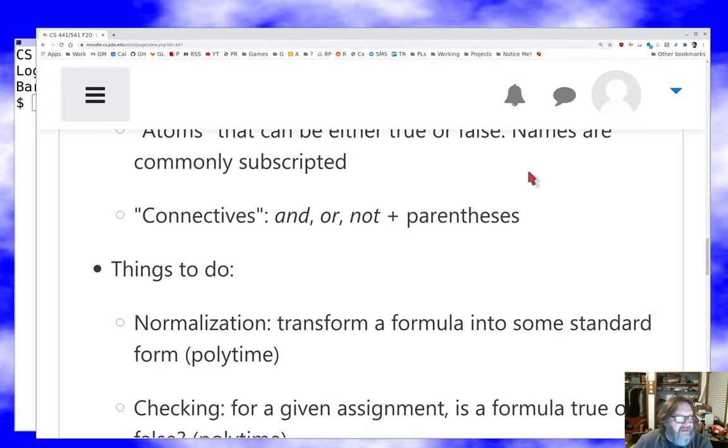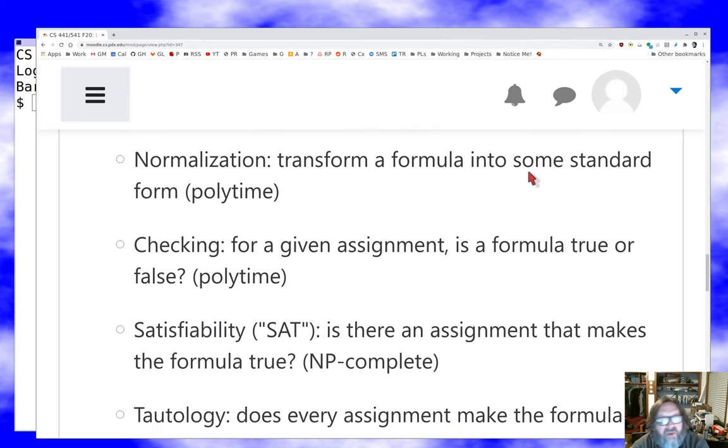I go back and find my well-formed formula that represents a situation and I can do some things with it. I can transform it into some standard form, and that's usually a polynomial time, polynomial space activity. For example, there's a polytime algorithm to transform any propositional formula into CNF, into conjunctive normal form. And a lot of times that is a first step in solving the problem, is to tackle that CNF representation. Checking for a given assignment: is a formula true or false? We know that's polytime, we know that's linear time in the size of the formula. We can just go through and evaluate the formula, and I think all of you could easily build an evaluator like that.